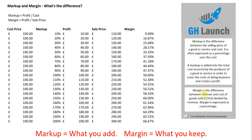Margin is the difference between revenue and cost of goods sold, divided by revenue. To simplify that, it's very simply profit divided by revenue, and again is often expressed as a percentage.